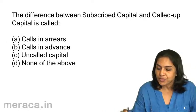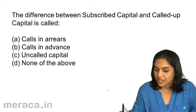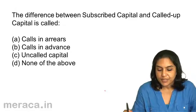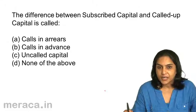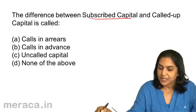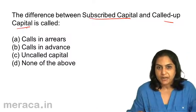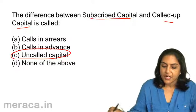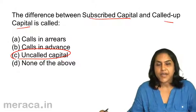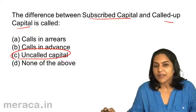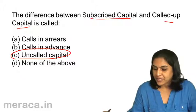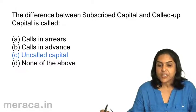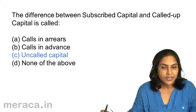The difference between subscribed capital and called-up capital is called: A. Calls in Arrears. B. Calls in Advance. C. Uncalled Capital. D. None of the above. Difference between subscribed capital and called-up capital — correct answer is C — Uncalled Capital. Subscribed capital is shown at the nominal value per share. Called-up capital is the actual called-up value per share. Therefore, the difference between subscribed capital and called-up capital is called uncalled capital.